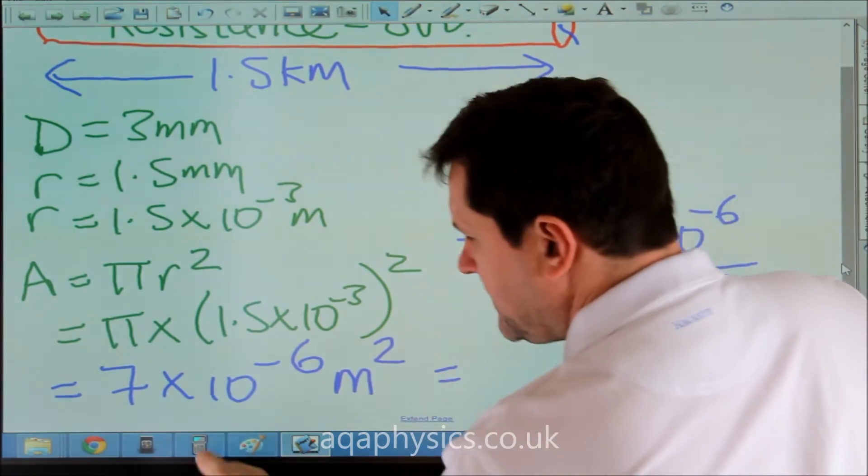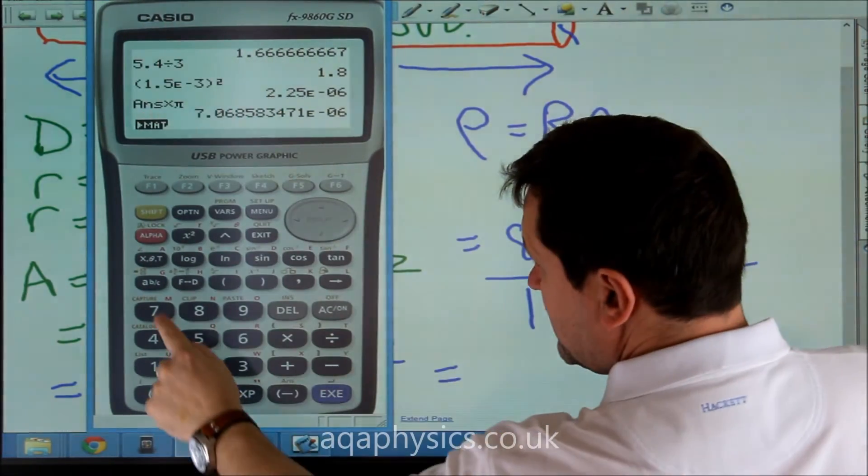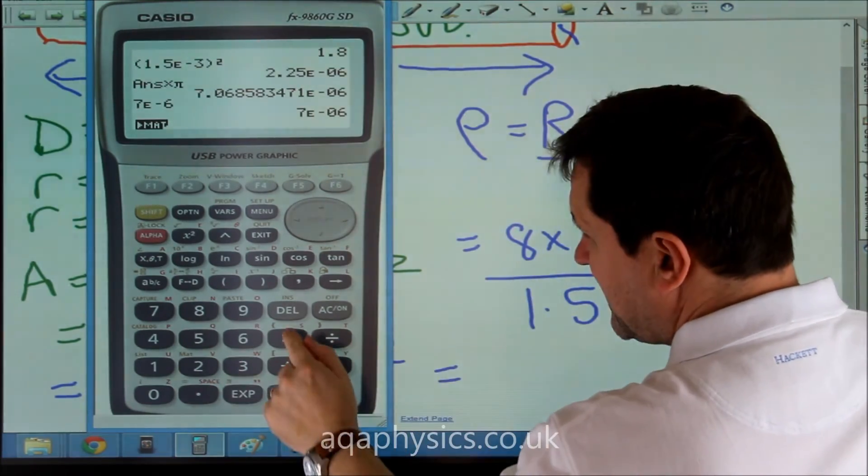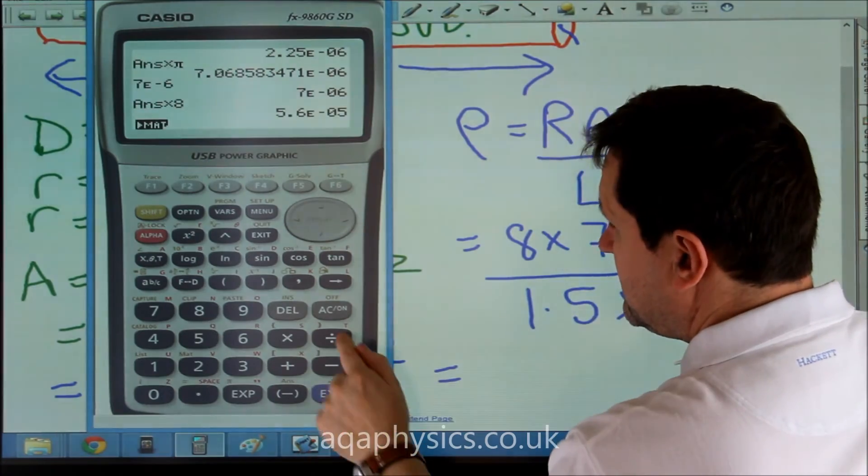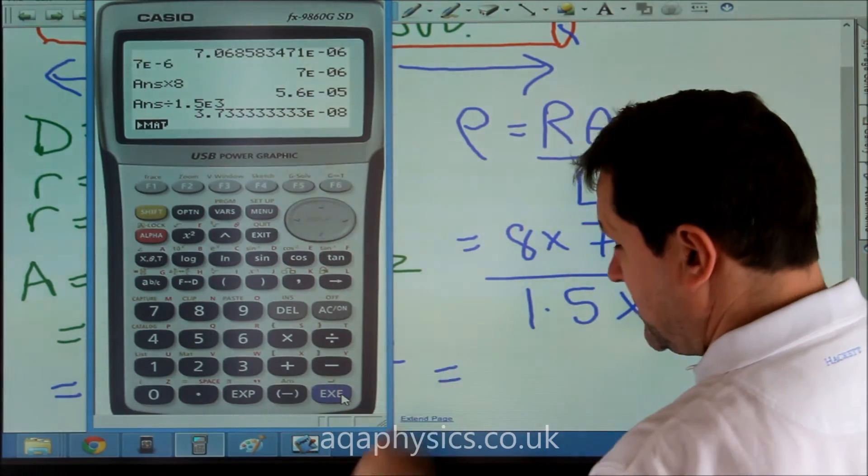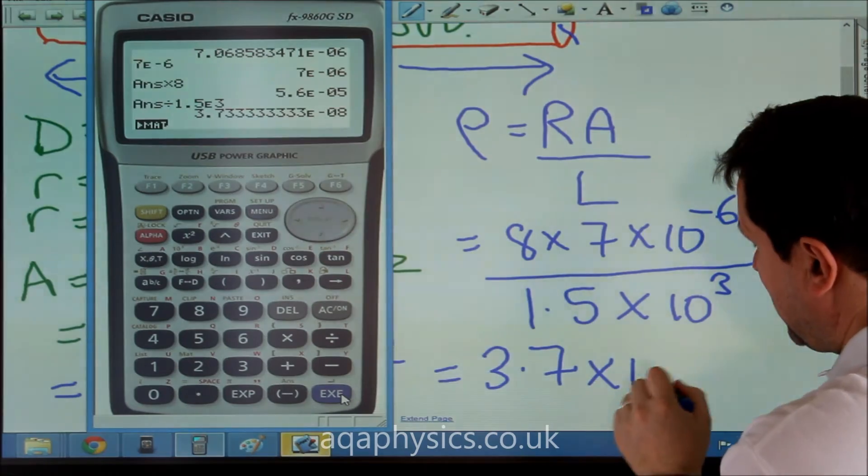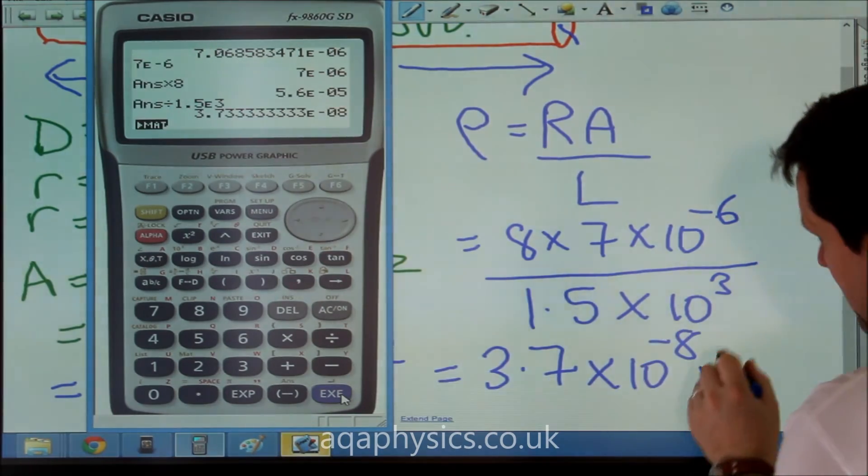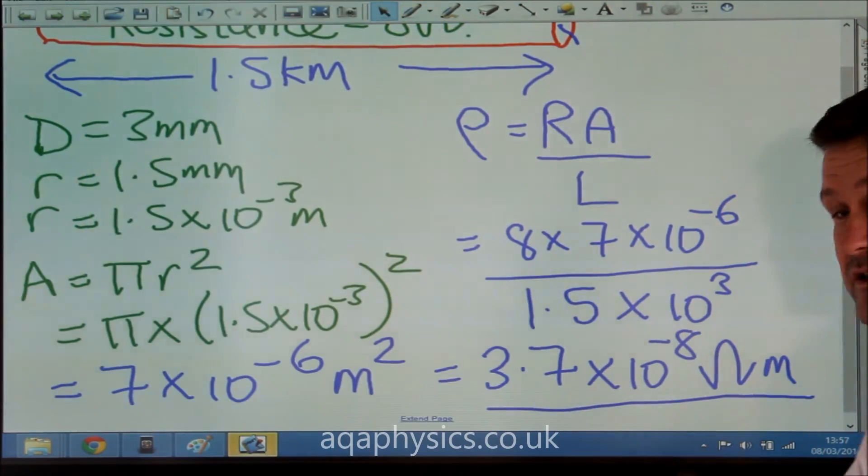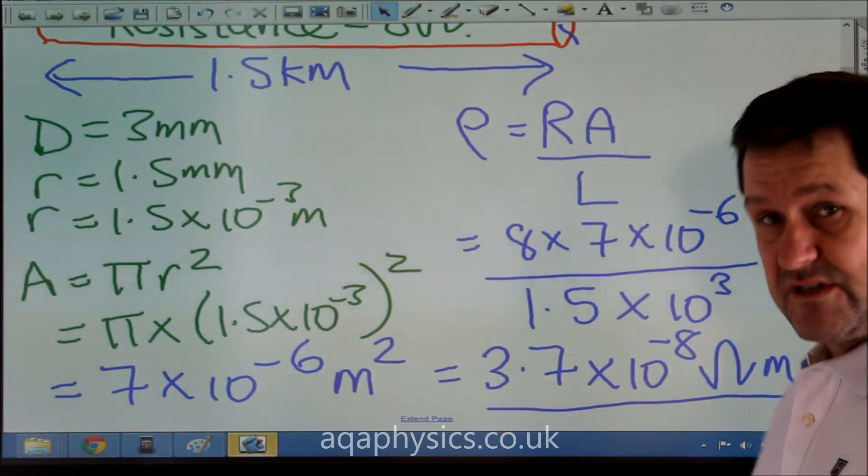That equals, using our calculator, 7 times 10 to the minus 6 times 8 divided by 1.5 times 10 to the 3 equals 3.7 times 10 to the minus 8 ohm meters. That will tell us the resistivity of this particular material, which has got an incredibly low resistance.